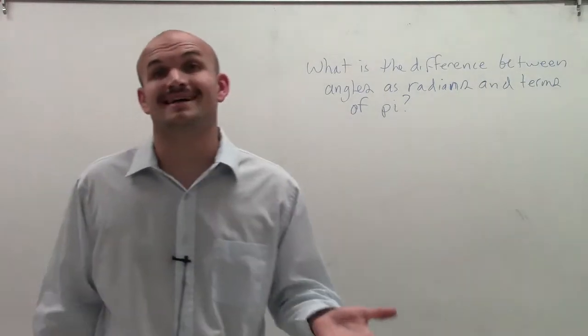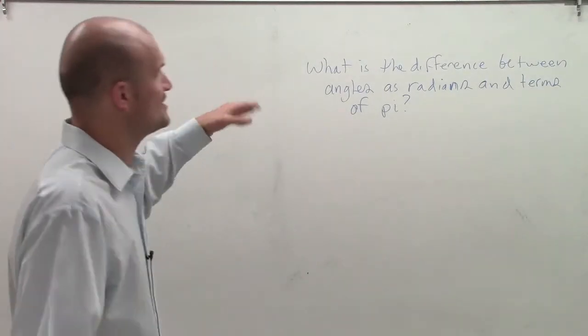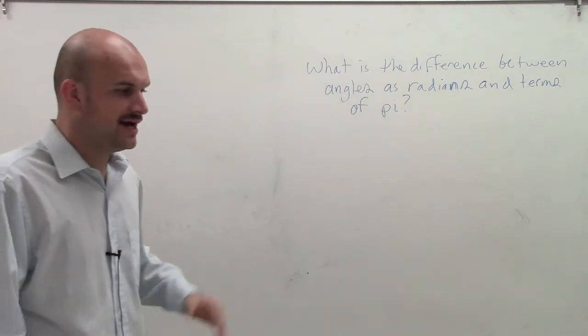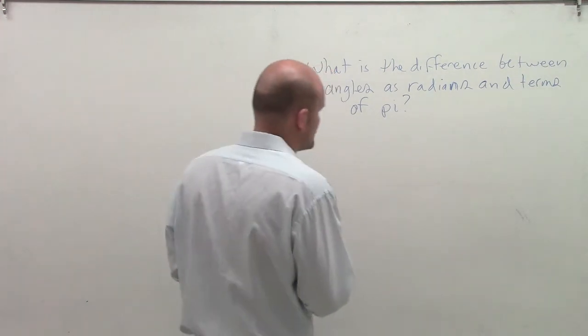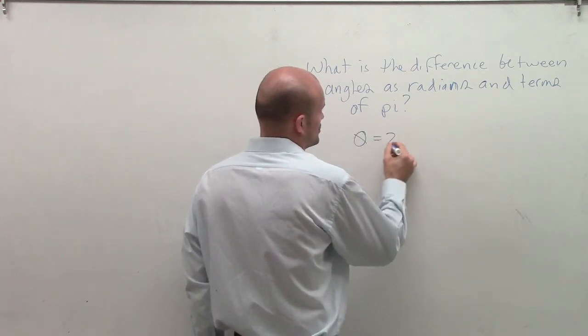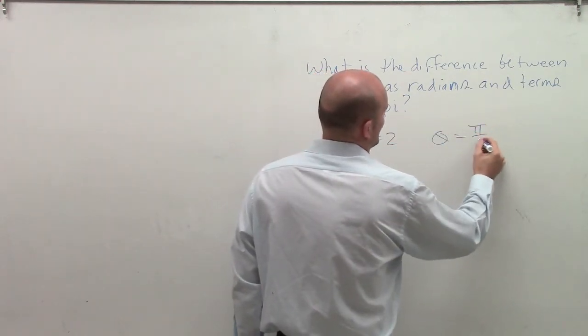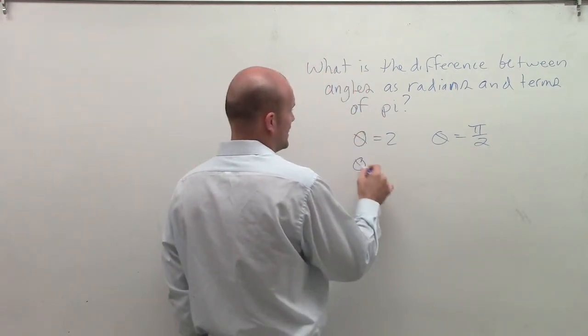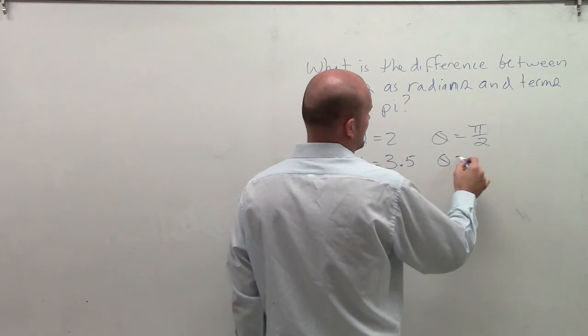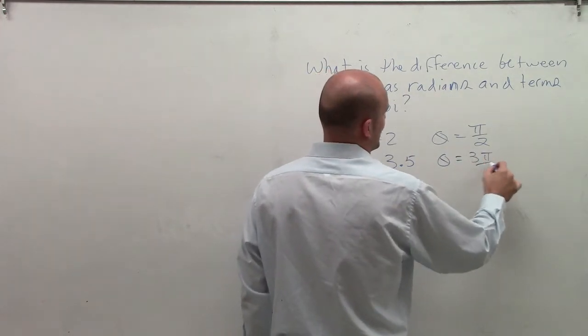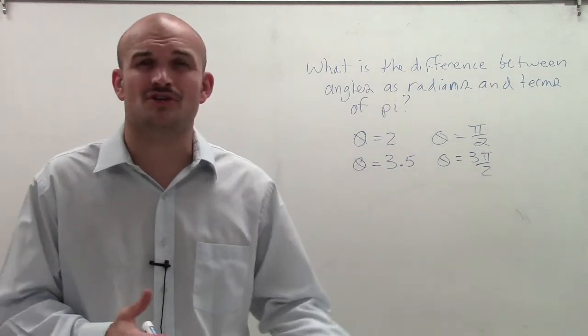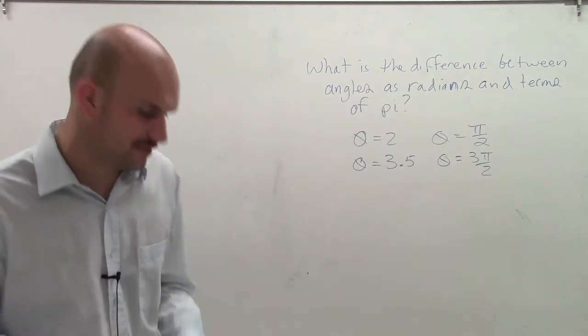OK, so welcome. Here's a question that I get a lot. And the question says, what is the difference between angles as radians and then in terms of pi? And what the students are referring to is if I say theta equals 2 or theta equals pi over 2, or theta equals 3.5 or theta equals 3 pi over 2. What's the difference? Are they both radians or those degrees? How do we know the difference and how to graph those?